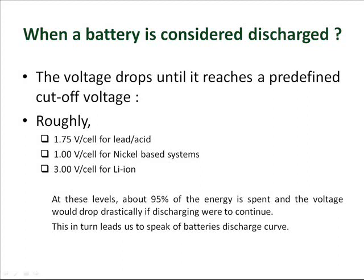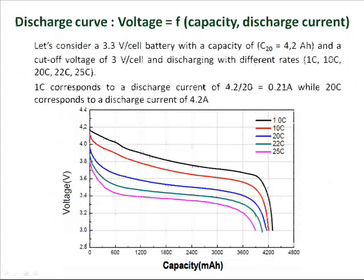This leads us to speak of the battery discharge curve, which expresses the voltage as a function of capacity and discharge current. Consider a 3.3 volt per cell battery with a capacity of C20 equal to 4.2 ampere-hour and a cut-off voltage of 3 volts per cell, discharged at different rates: 1C, 10C, 20C, 22C, and 25C. 1C corresponds to a discharge current of 4.2 divided by 20, which equals 0.21 amperes, while 20C corresponds to a discharge current of 4.2 amperes.